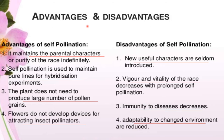Regarding advantages and disadvantages of self pollination: self pollination maintains the parental characteristics or purity of the race indefinitely. The disadvantage is that new useful characters are seldom introduced. Self pollination is used to maintain pure lines for hybridization experiments.